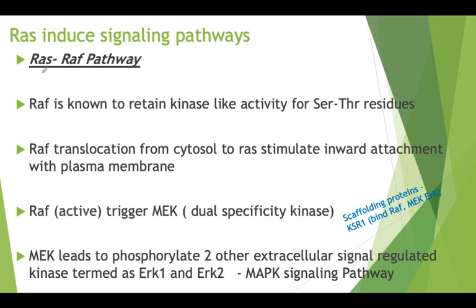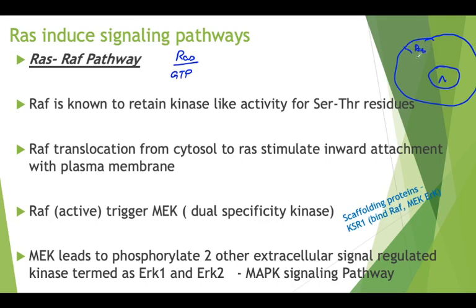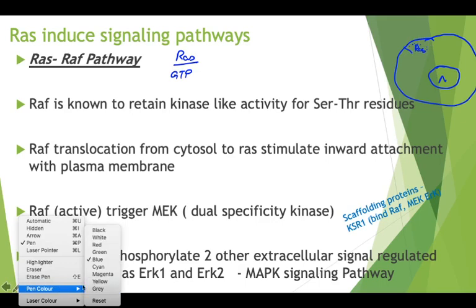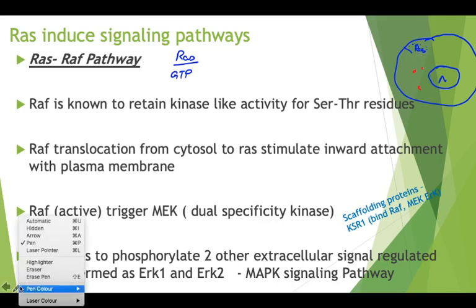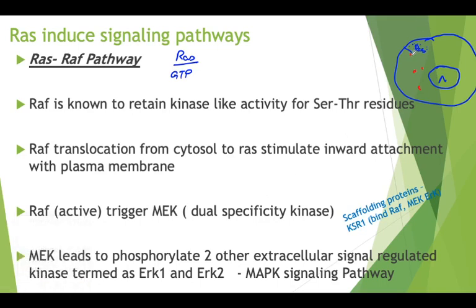The first is the RAS-RAF pathway. Upon activation of RAS, the activated RAS has GTP bound to it. This activation tries to translocate distantly placed RAF particles closer to it. Let me draw a cell with a nucleus and RAS bound to the membrane — upon activation, RAF particles are brought into the vicinity of RAS.